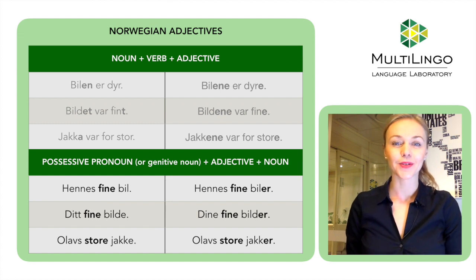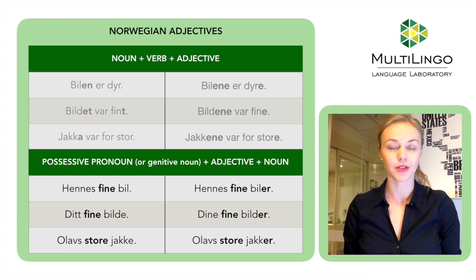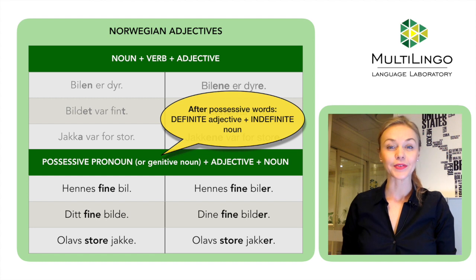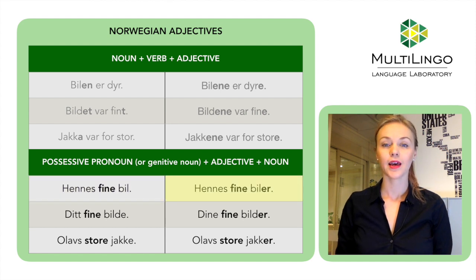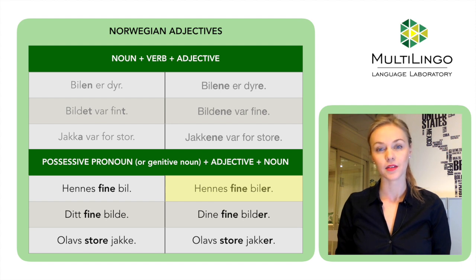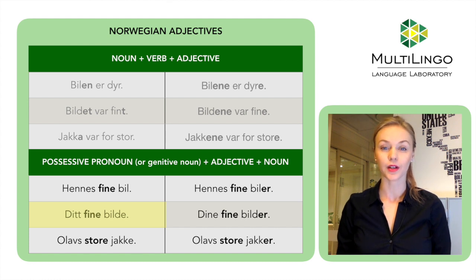The last combination is the possessive construction. It might start with a possessive pronoun like 'mine,' 'his,' or 'yours,' or it can start with a noun in genitive form like 'Ølavs jakke' — Ølav's jacket. Here, after possessive words we use the indefinite form of the noun but the definite form of the adjective. Hennes bil — her car. Hennes fine bil — her nice car. 'Fine' is definite. Ditt bilde — your picture. Ditt fine bilde — your nice picture. Dine fine bilder — your nice pictures.